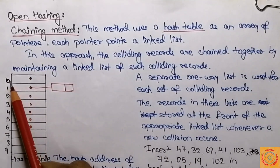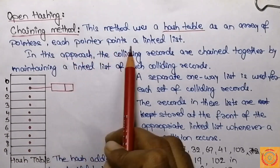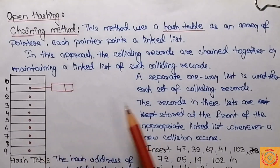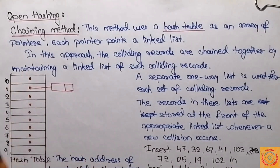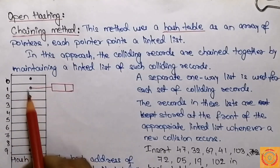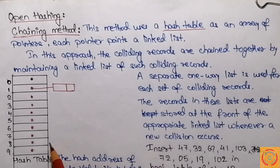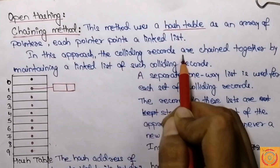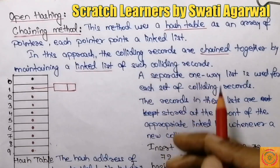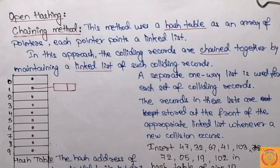Here we have a hash table represented as an array of pointers. The indexes from 0 to 9 are the array of pointers, and each pointer points to a linked list. Each location of the hash table — each pointer in the array — represents a linked list. So these indexes 0, 1, up to n each point to a separate linked list. In this approach, the colliding records are chained together by maintaining a linked list of such colliding records.